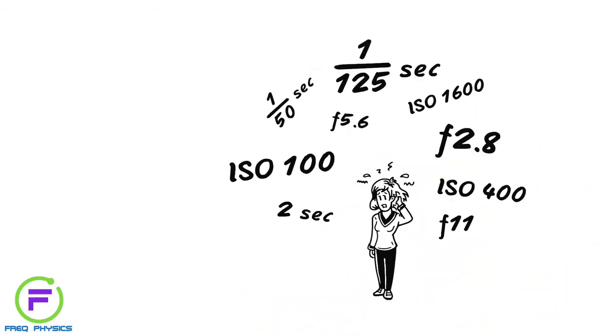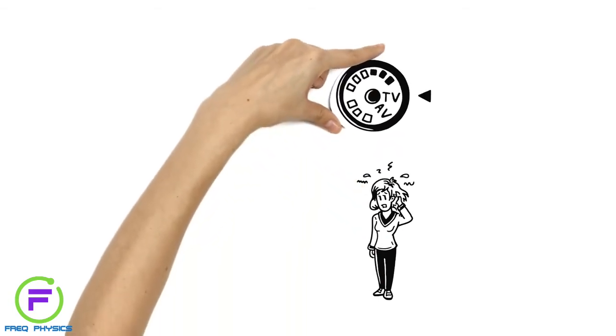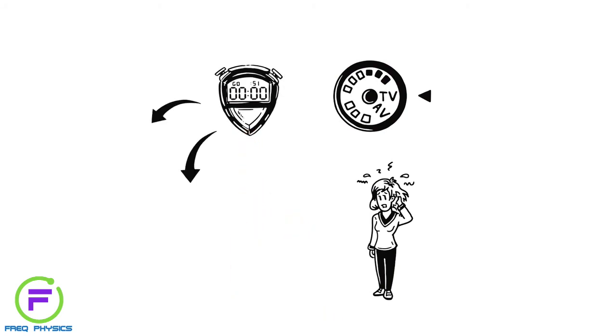Mary is overwhelmed. Fortunately, she doesn't have to do everything manually to take pretty pictures. In semi-automatic mode, Mary specifies just one value. The camera figures out the rest.